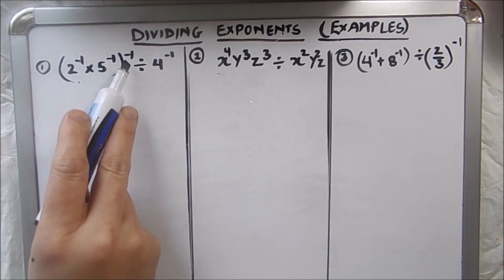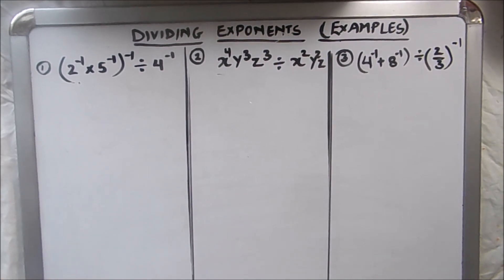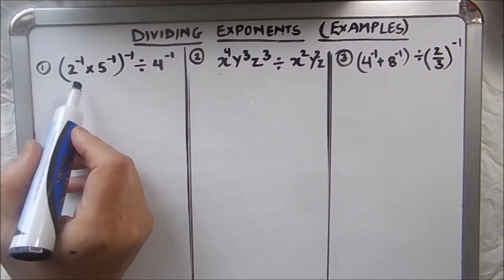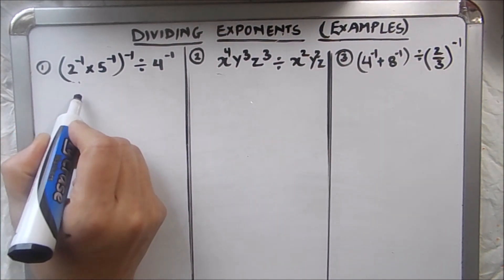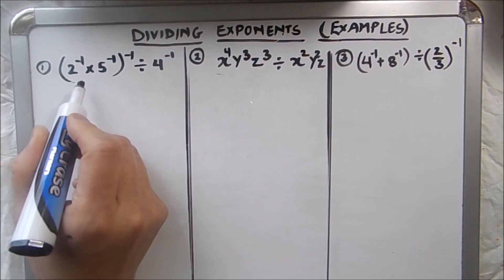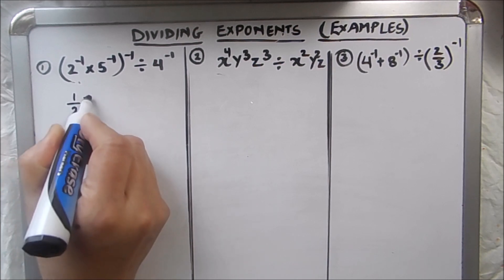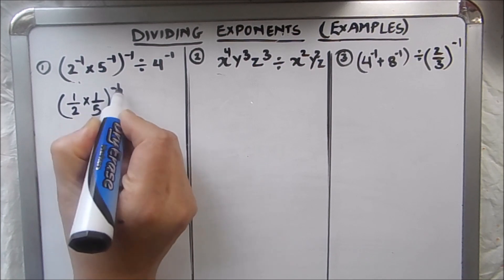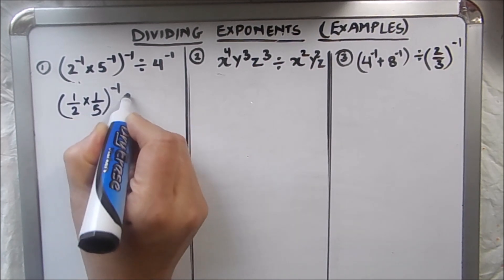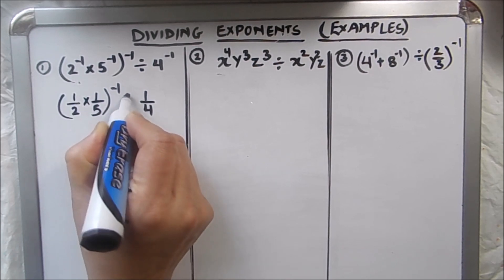whole raised to the power minus 1, divided by 4 to the power minus 1. Here, first of all, we'll use the rule of negative exponents to make the exponents positive. We are going to take the reciprocal, so 2⁻¹ becomes 1 over 2, and 5⁻¹ becomes 1 over 5, raised to the power minus 1, divided by 1 over 4, since 4⁻¹ is 1 over 4.